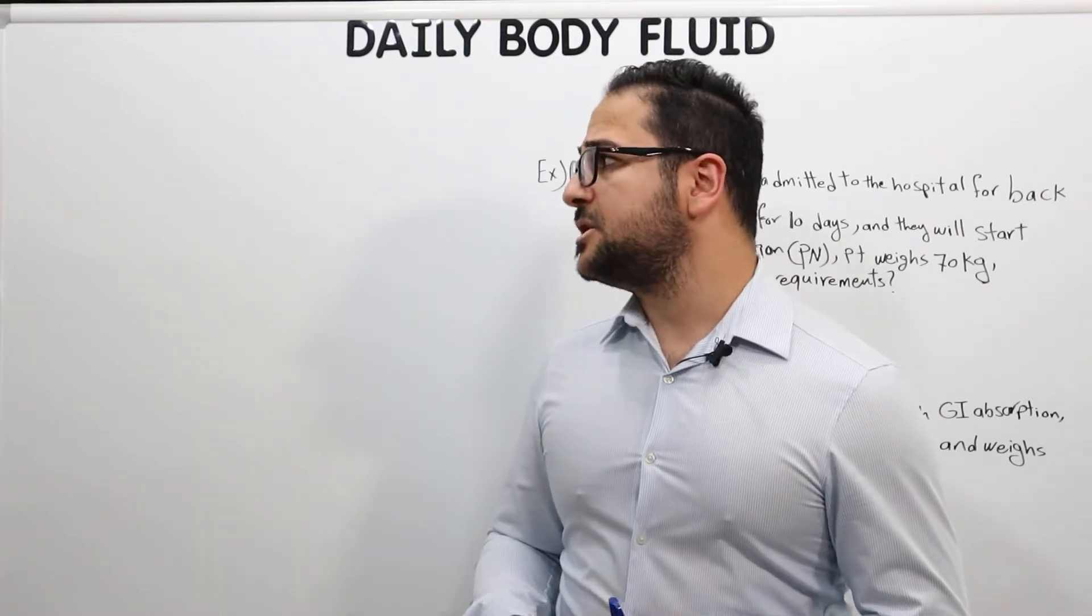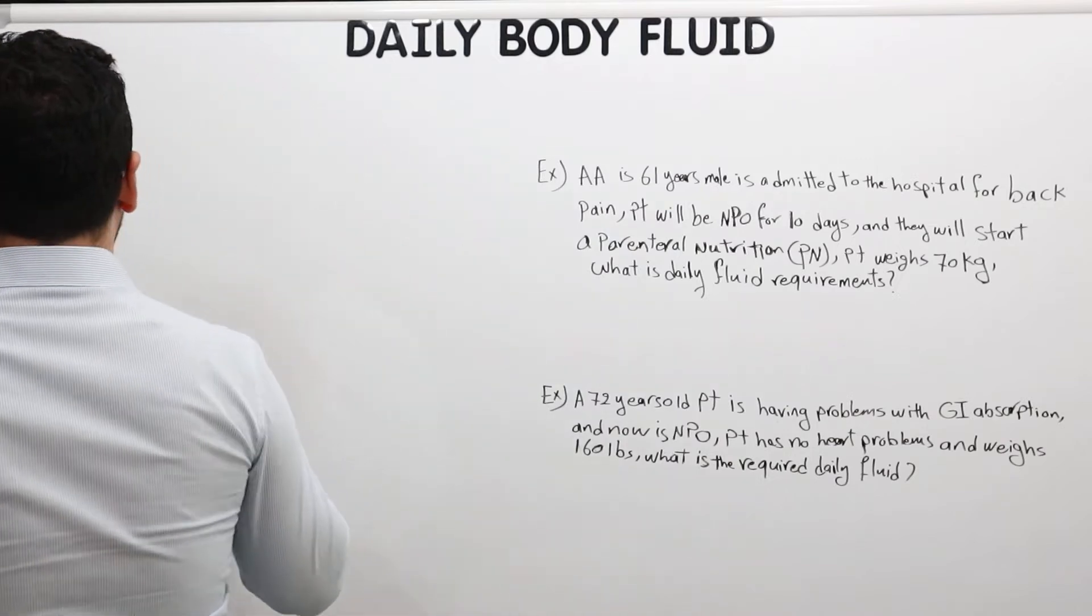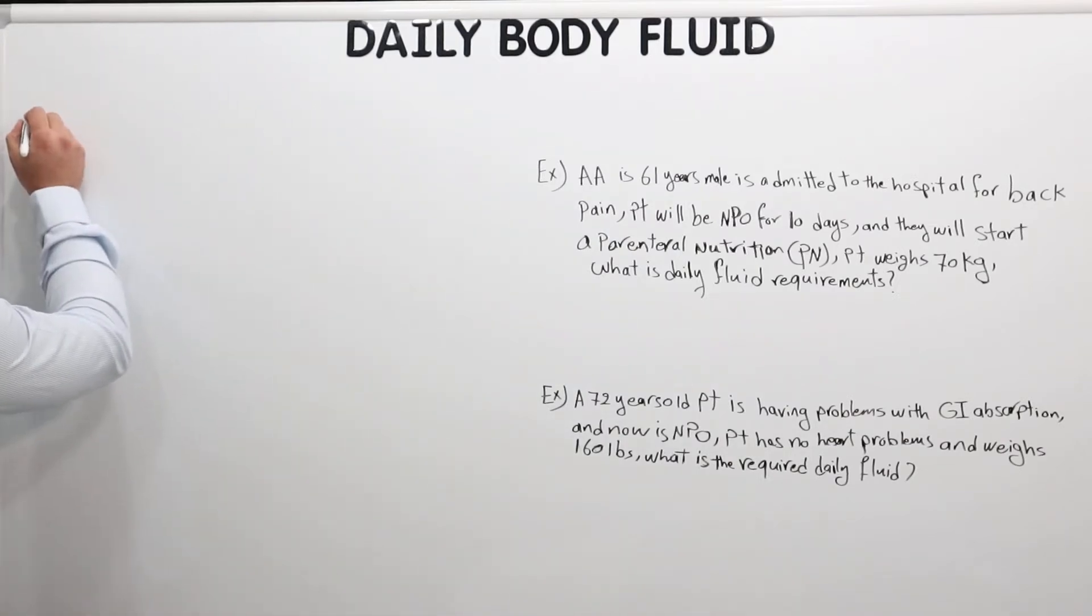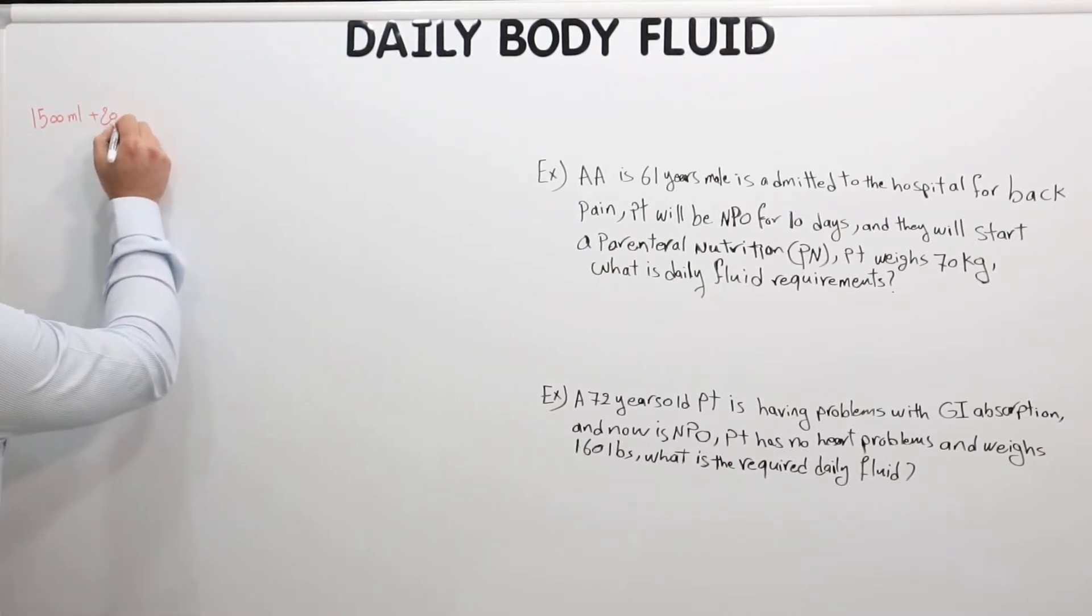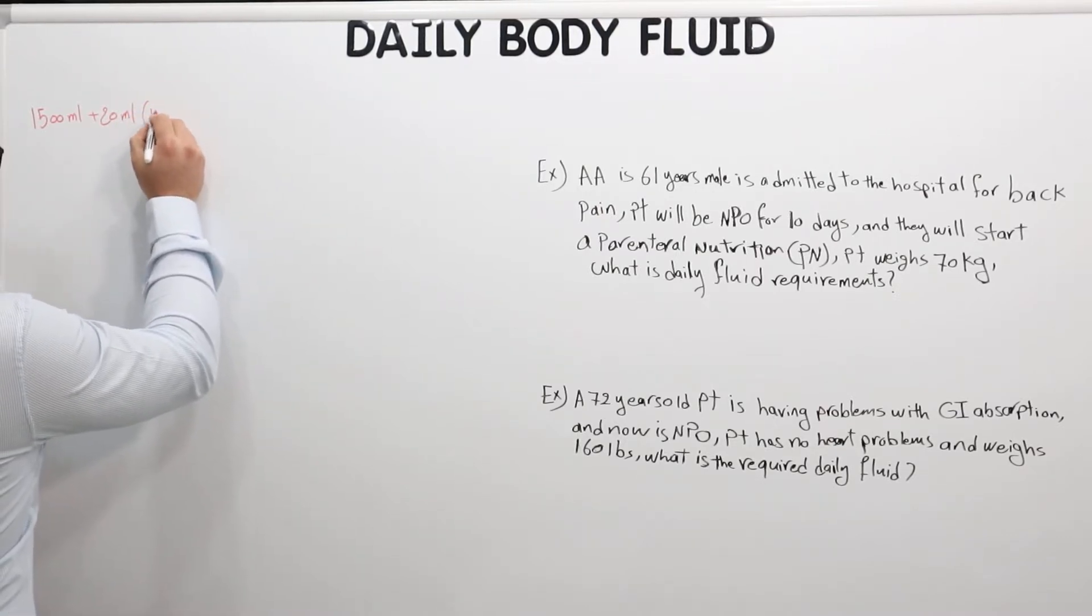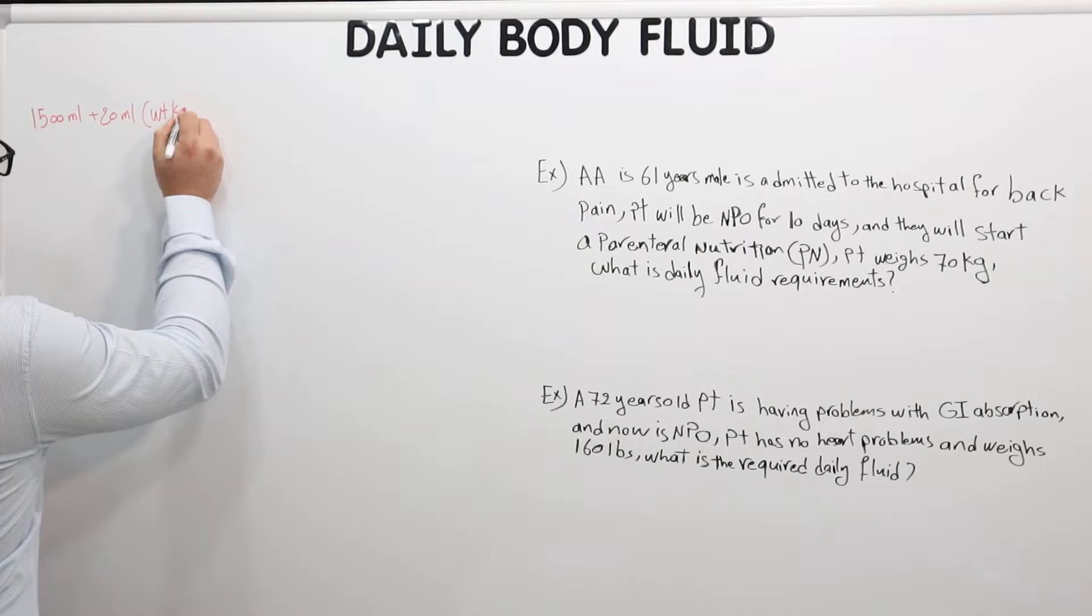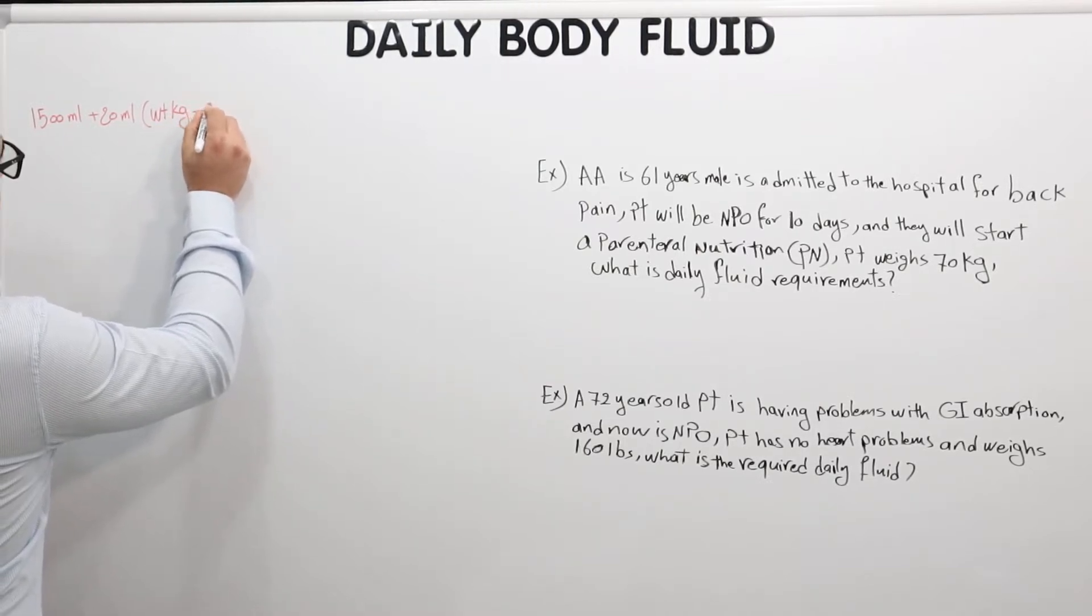We do this calculation through this formula. The formula is basically 1500 milliliters plus 20 milliliters times weight in kilograms minus 20.